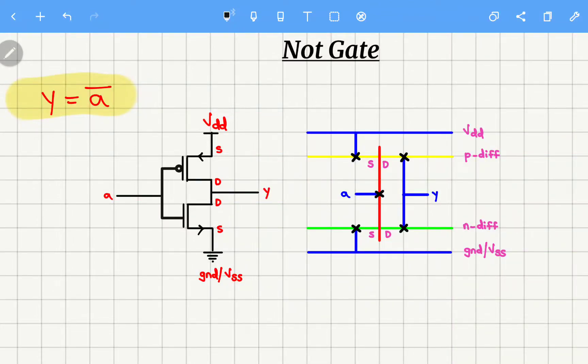In this video let us see how to draw the stick diagram of a CMOS NOT gate. First thing is we need to know the boolean expression of it, which is y equal to a bar.